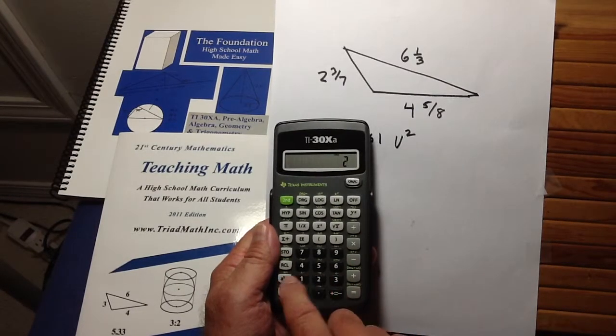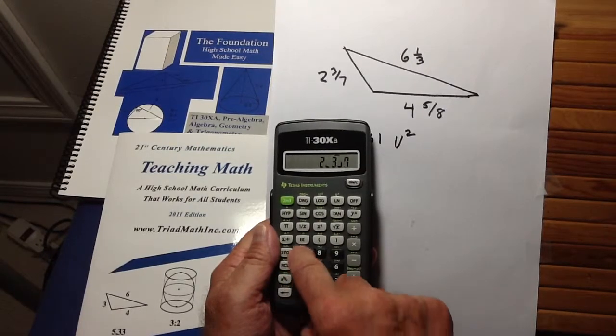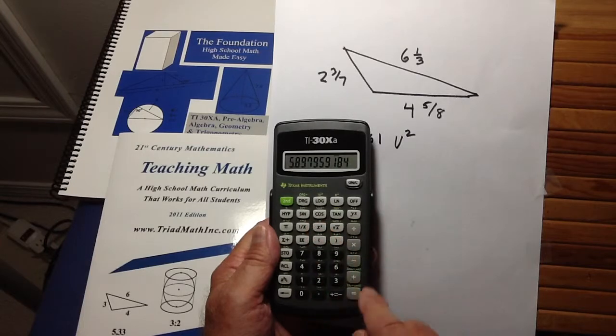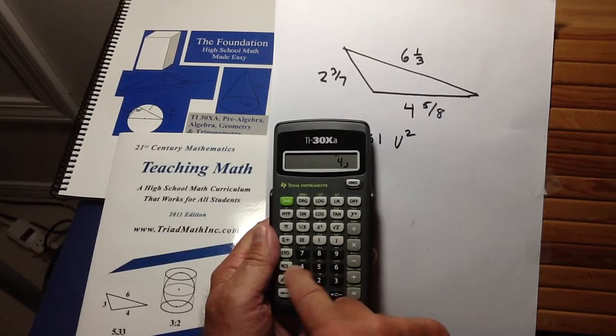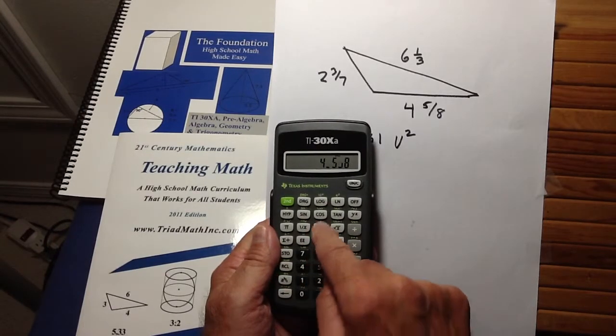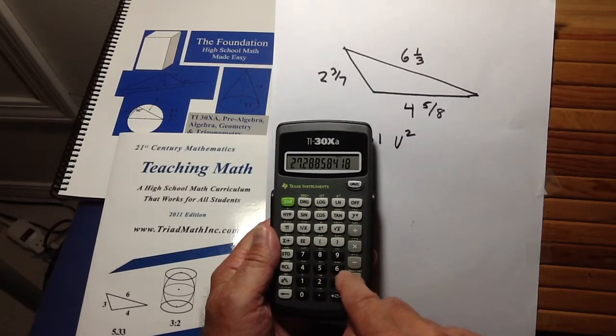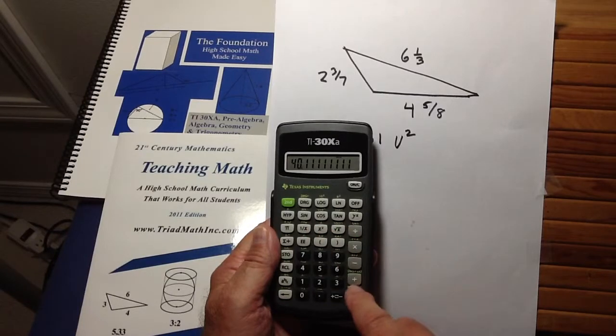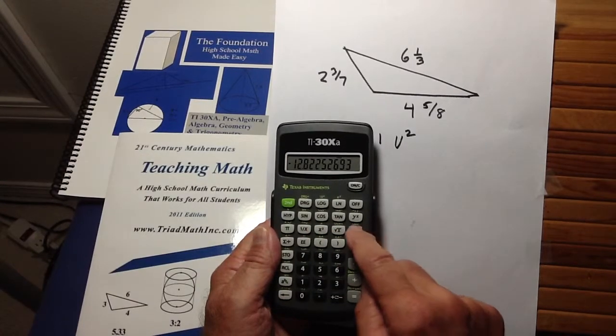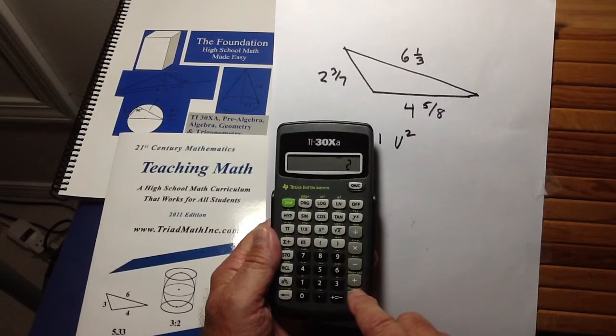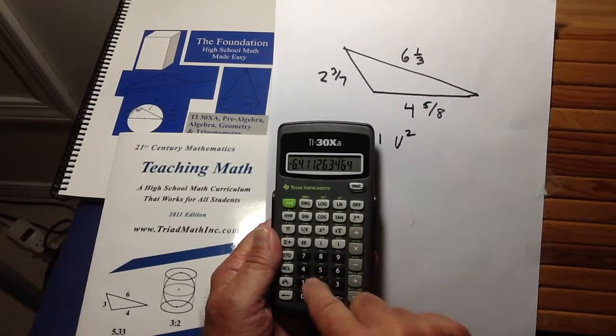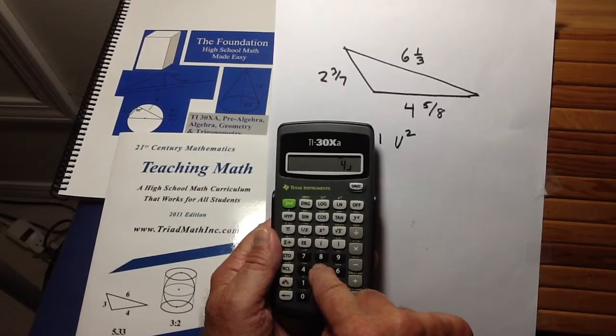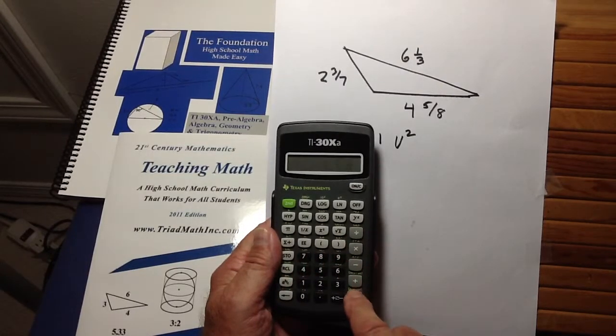And here's how it goes. I'm going to take 2 and 3/7ths. Notice this is a fraction I've entered using this calculator. And I'm going to square it, and I'm going to add 4 and 5/8ths. I'm going to square that, and then I'm going to subtract 6 and 1/3rd squared, and I'm going to get that. Then I'm going to divide by 2 equals, then I'm going to divide by 2 and 3/7ths equals, I'm going to divide by 4 and 5/8ths. This is what, of course, they're learning to do.